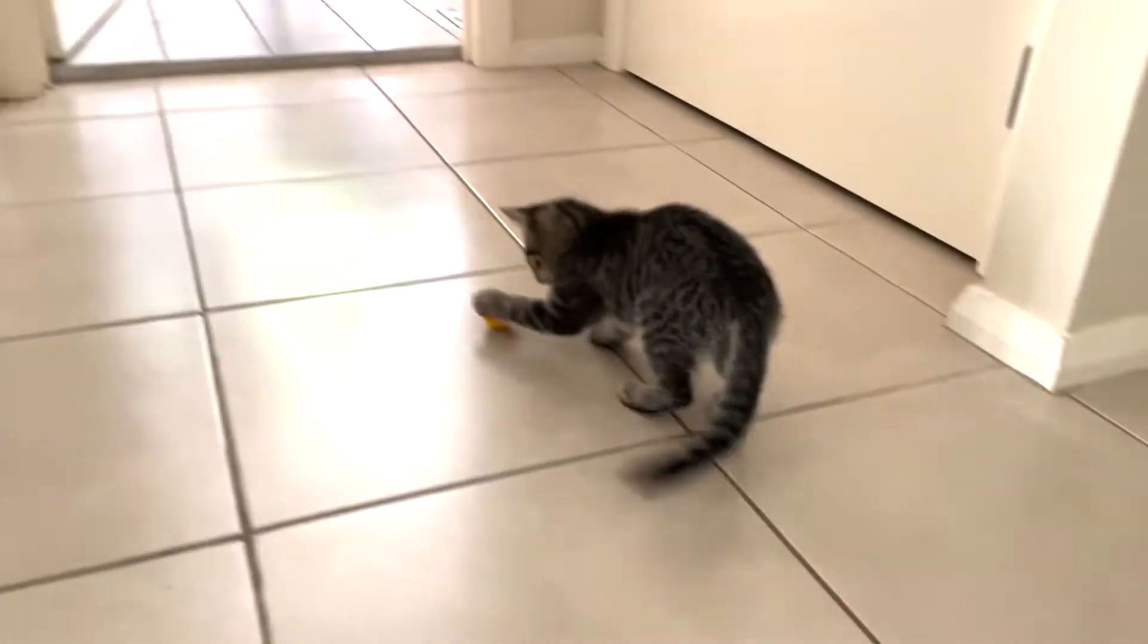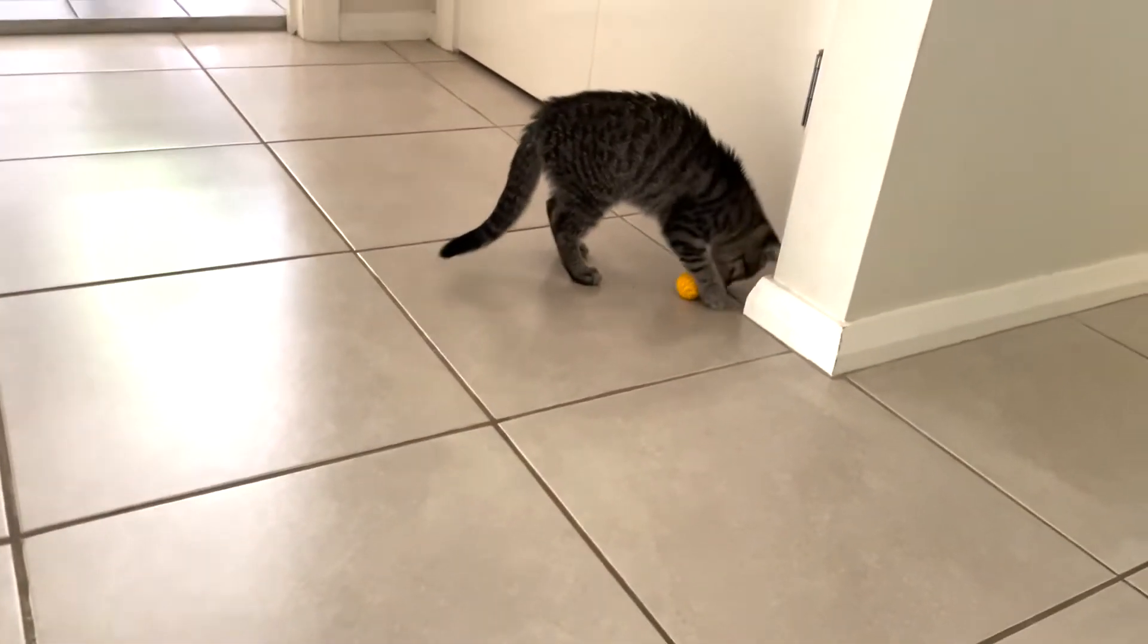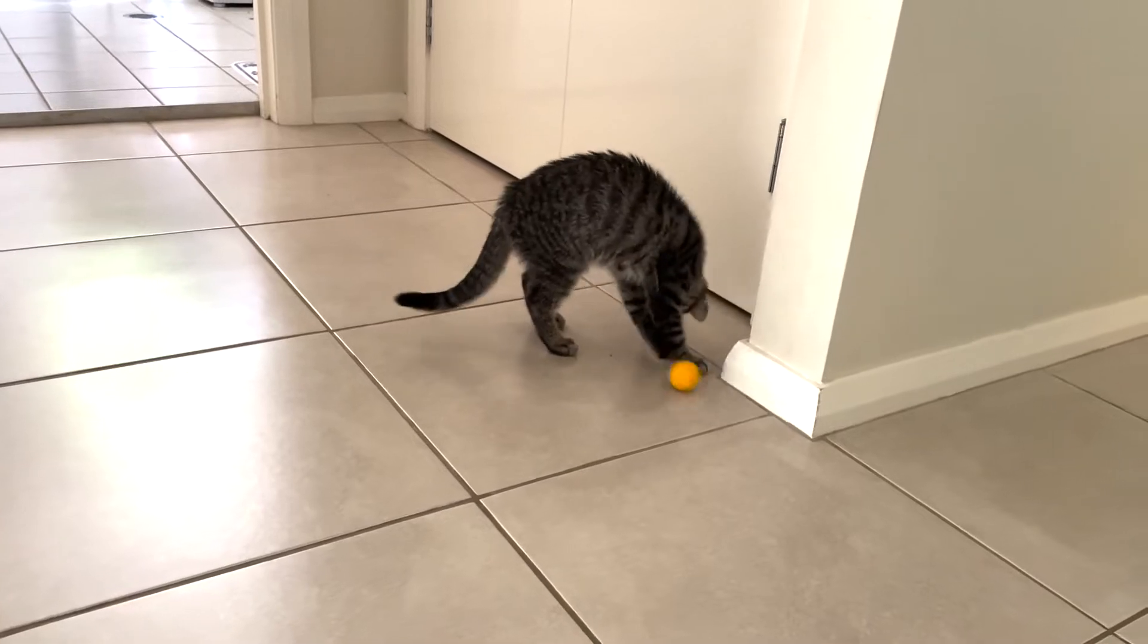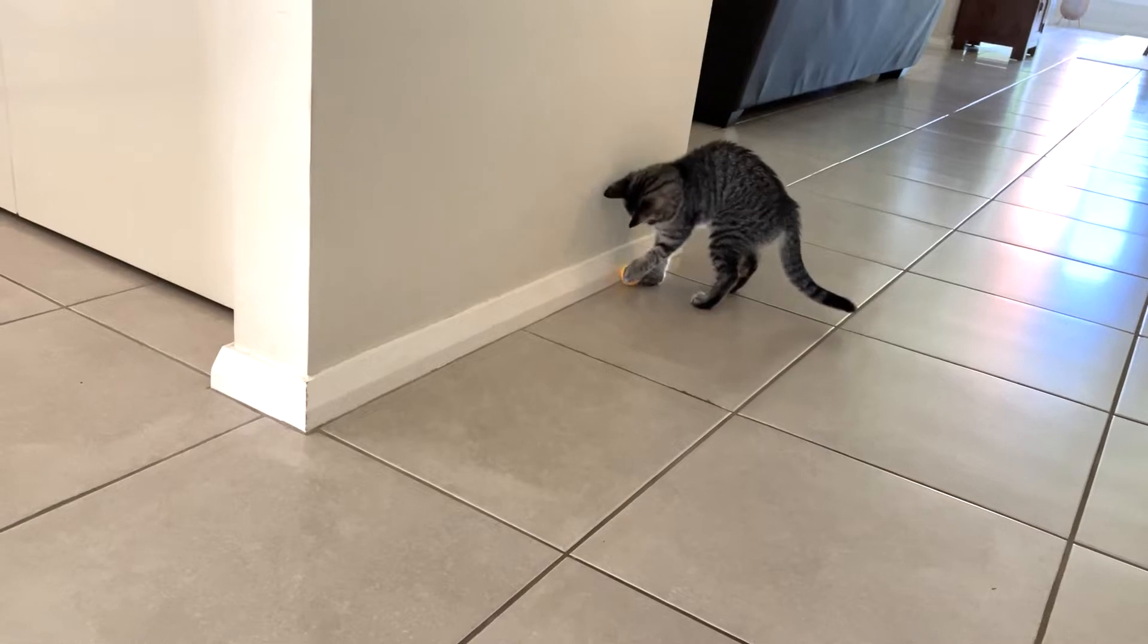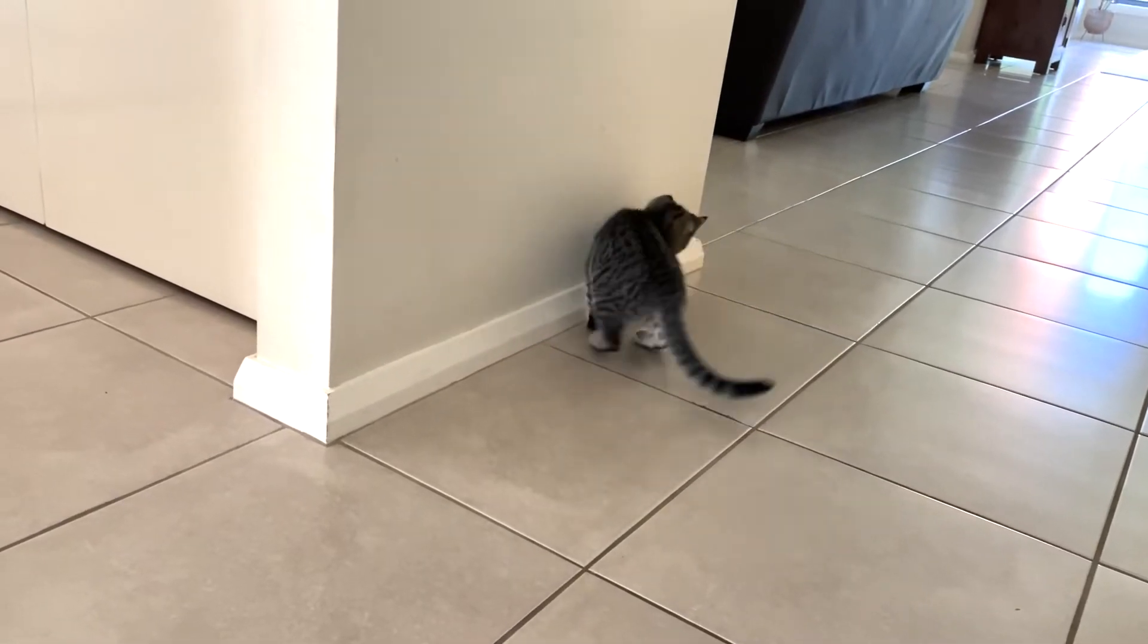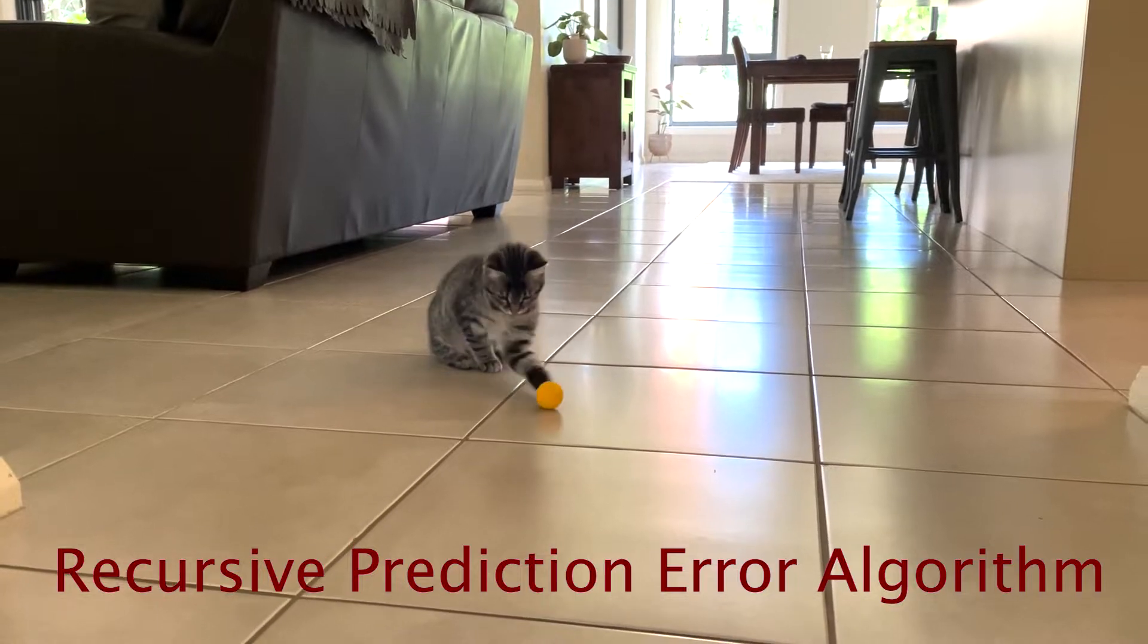You can see that at first she makes big adjustments and jumps around the ball, but now she's getting older and she's learned more about the ball's behavior, and she makes much smaller reactions and updates. Let's see how this translates in a parameter estimation algorithm, and let's look at what's called the recursive prediction error algorithm.